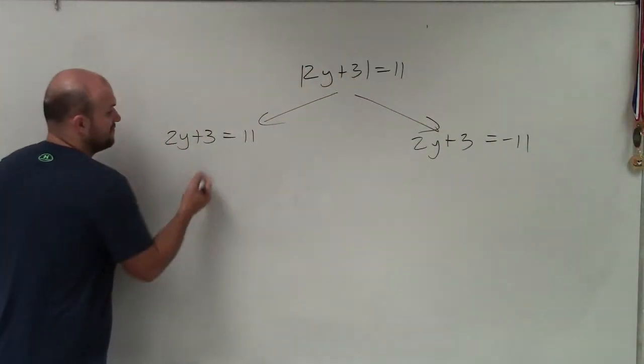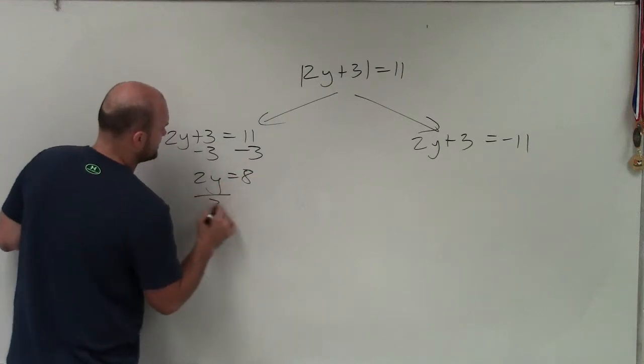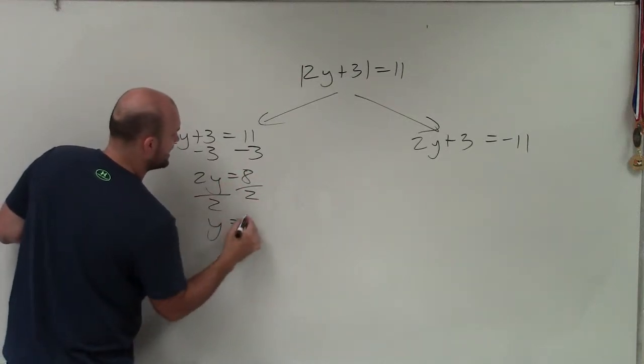So now I'm simply just going to solve for x. So I subtract 3, subtract 3. 2y is equal to 8, divide by 2, divide by 2. y equals 4.